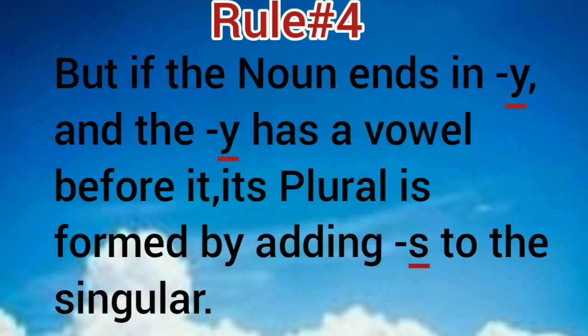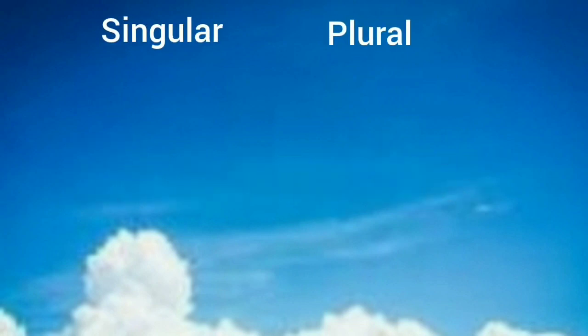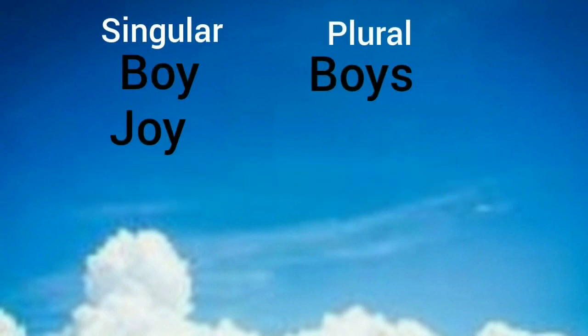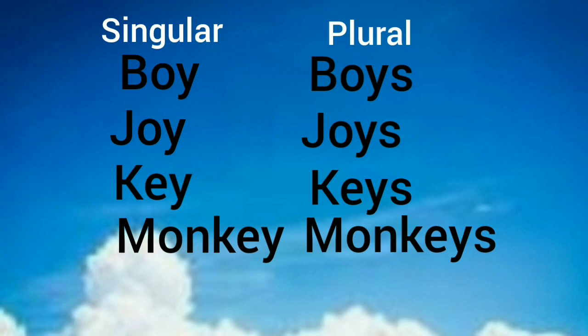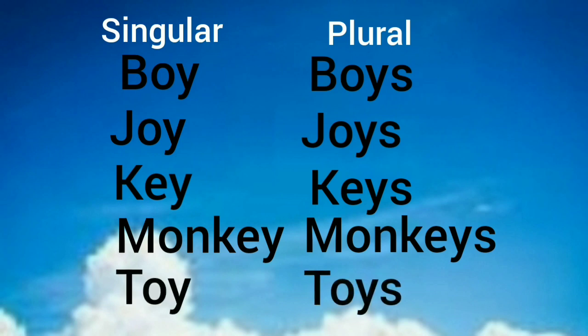But if the noun ends in -y and the -y has a vowel before it, its plural is formed by simply adding -s to the singular. Examples: boy-boys, joy-joys, key-keys, monkey-monkeys, toy-toys.